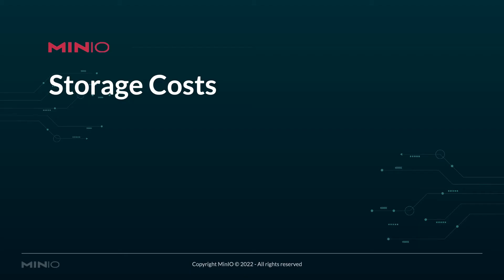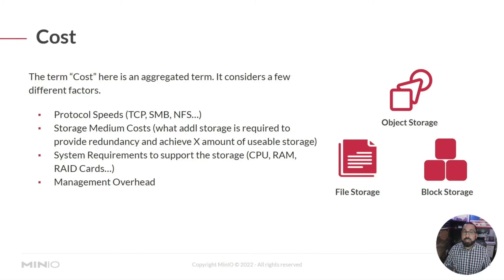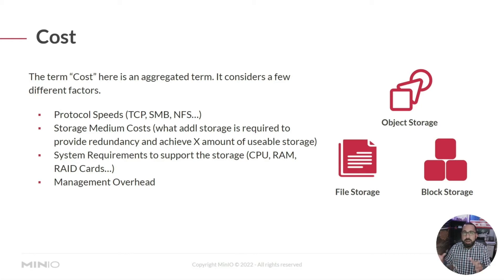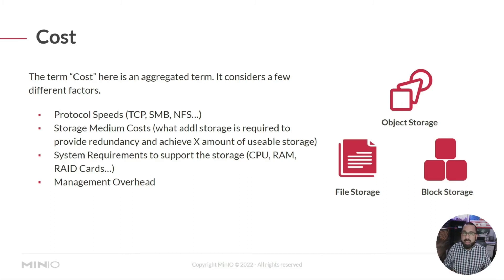Let's talk about cost. The term cost here is an aggregate term that considers a few different factors. First is protocol speed — TCP, SMB, NFS, things like that. Then storage medium cost, meaning what additional storage is required to provide redundancy, which is a big deal particularly in enterprise. There are also system requirements to support CPU, RAM, and RAID cards, as well as the management overhead of each of these systems.